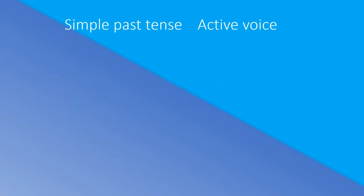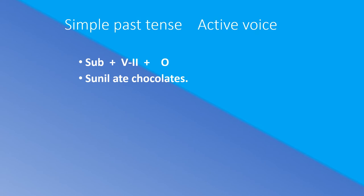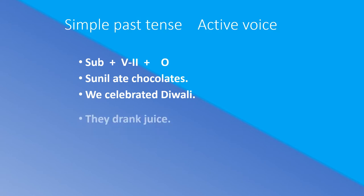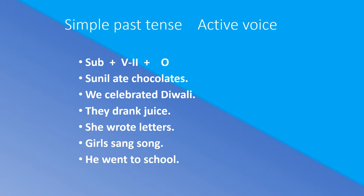Simple Past Tense — Active Voice formula: Subject + verb in the second form (past tense form) + object. Examples: 'Sunil ate chocolates. We celebrated Diwali. They drank juice. She wrote letters. Girls sang a song. He went to school.' Here, all the verbs are in the second form, or past tense form.